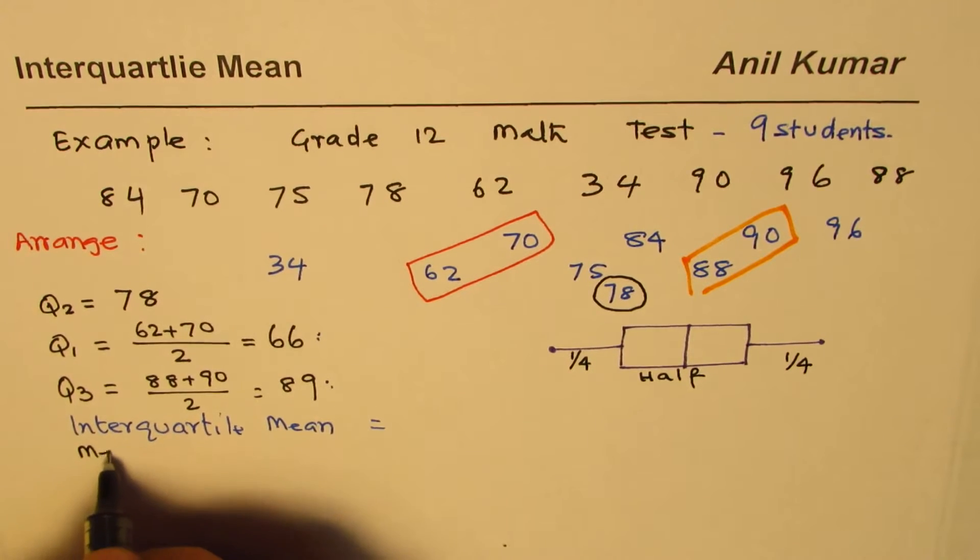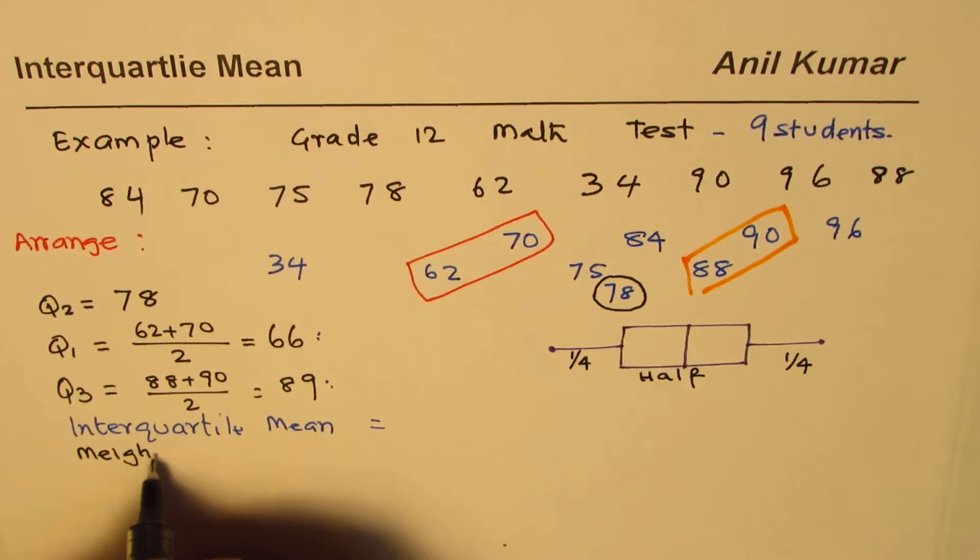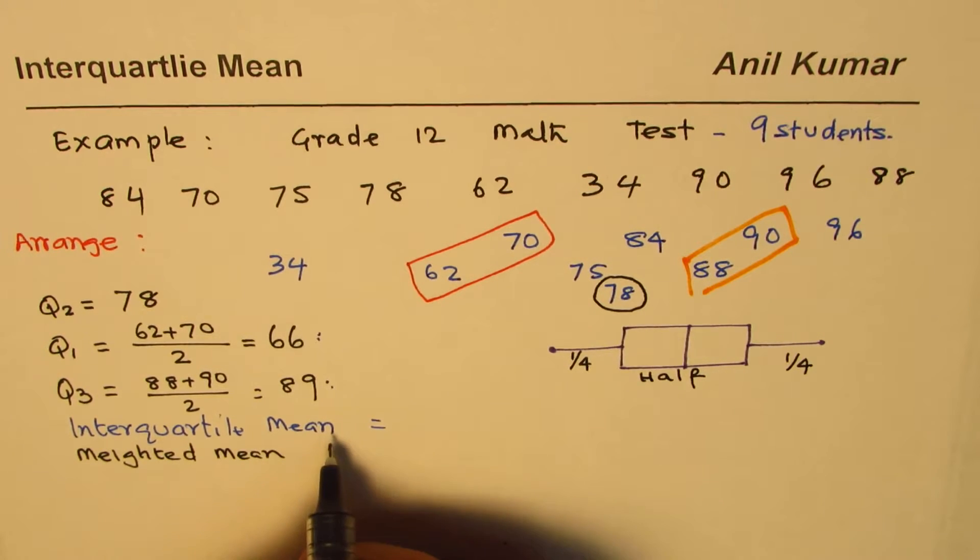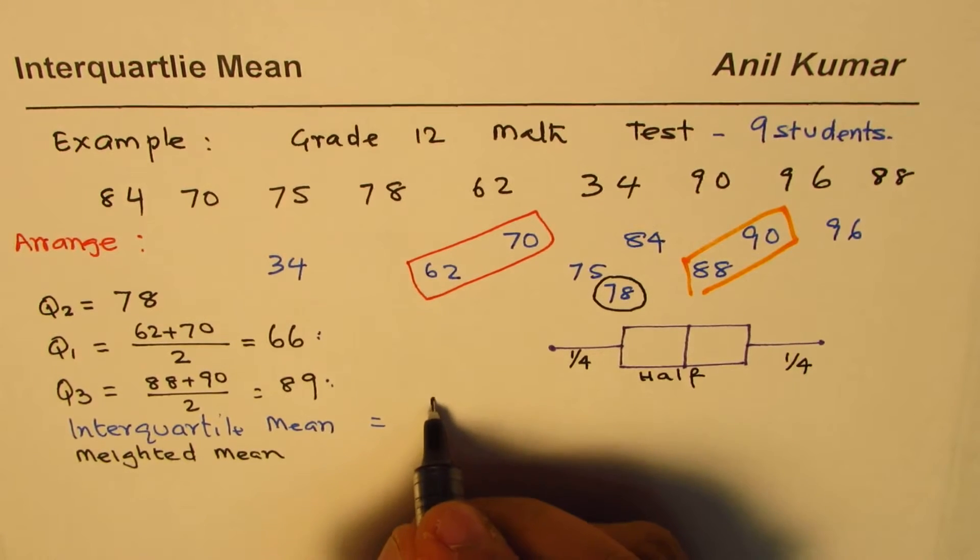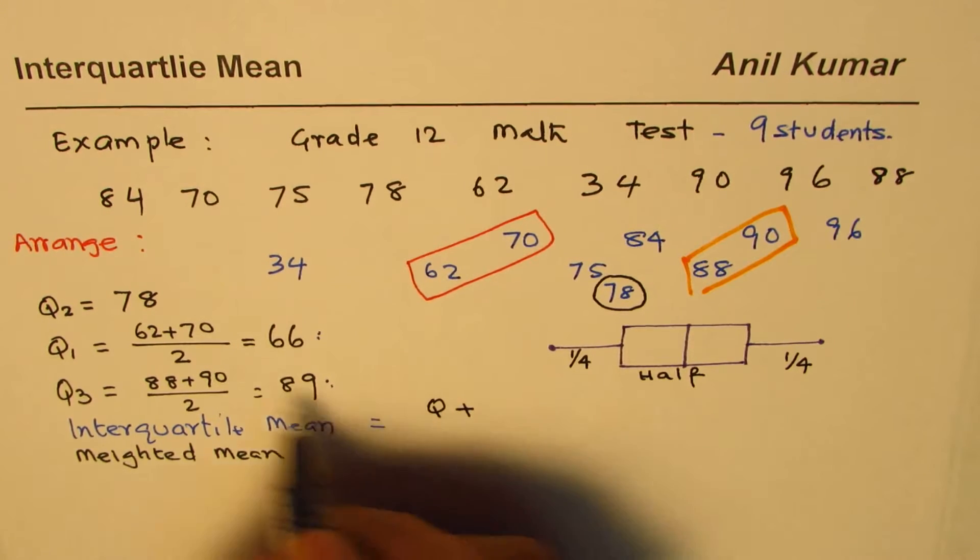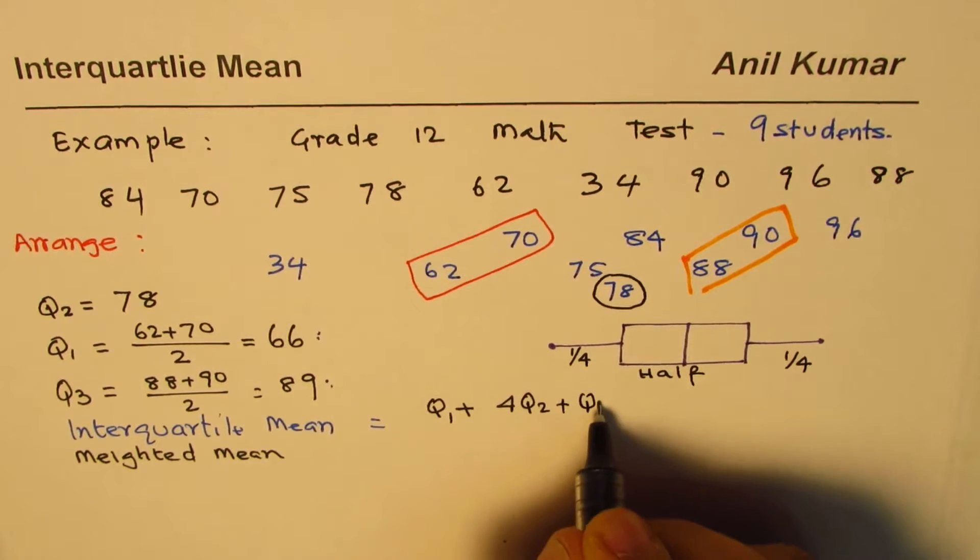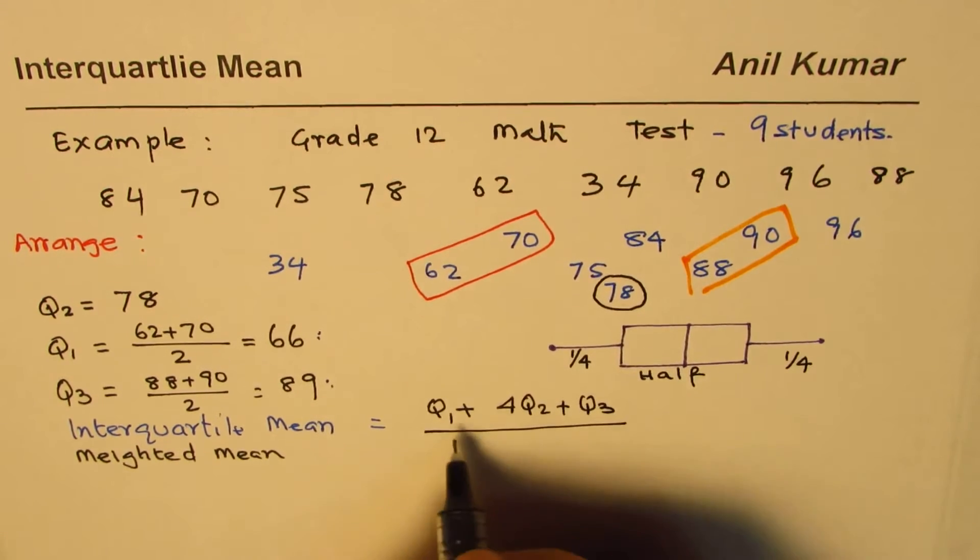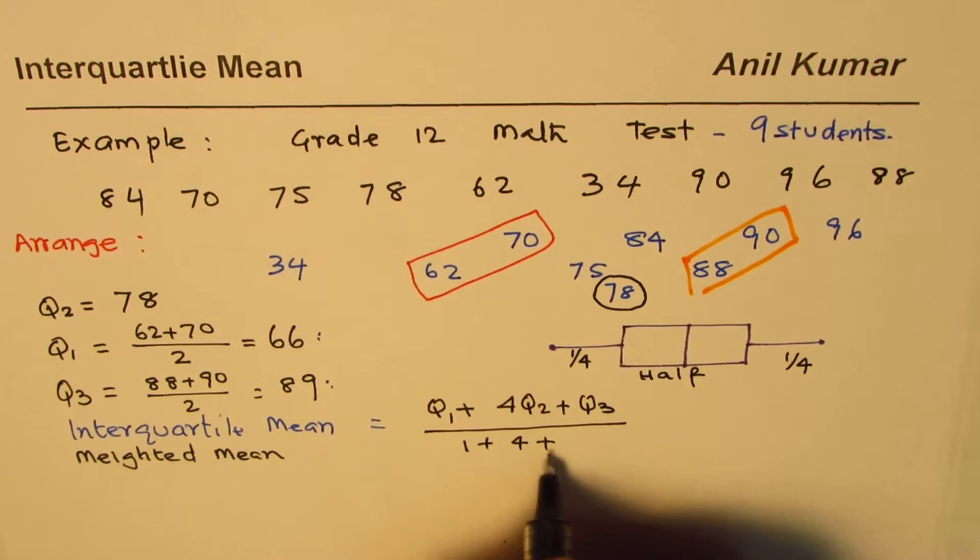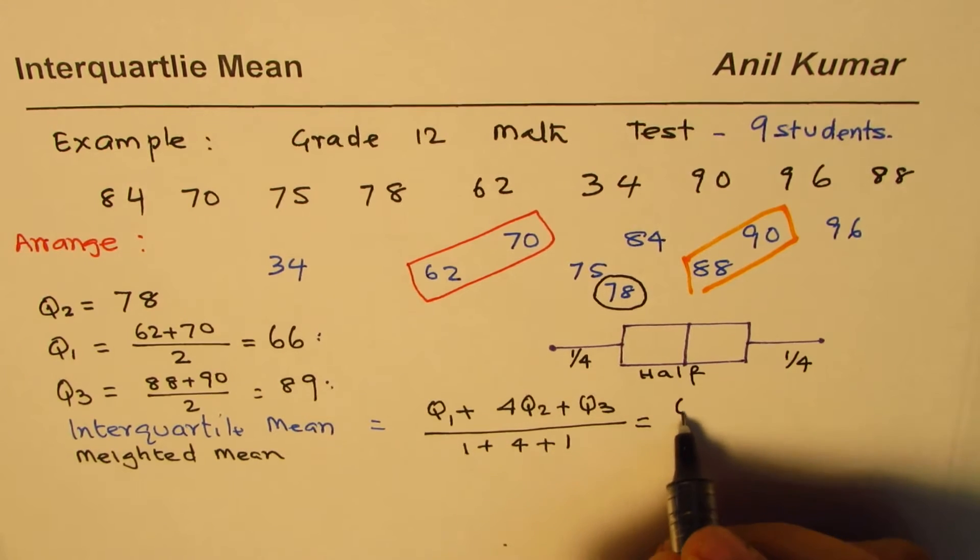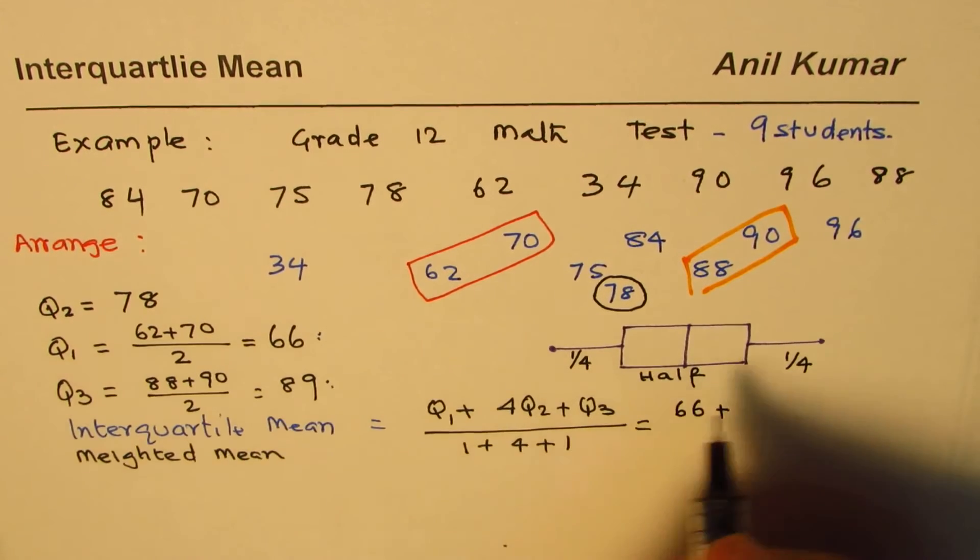And the formula becomes Q1 plus 4 times Q2 plus Q3 divided by 1 plus 4 plus 1. In our case, Q1 is 66 plus 4 times Q2 is 78 plus 89 divided by 6.